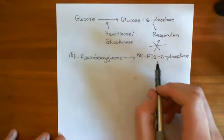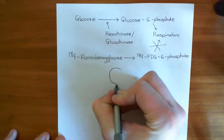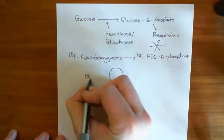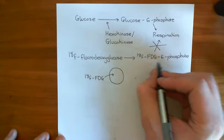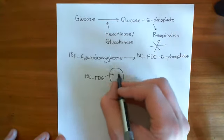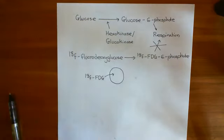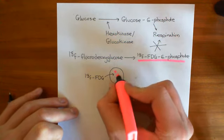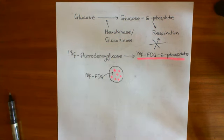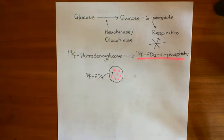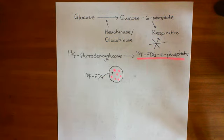So this molecule gets trapped within the cancerous cell. The cell takes up 18F-fluorodeoxyglucose-6-phosphate and it just gets trapped — the cell can't get rid of it, so it builds up lots of this molecule within its cytoplasm. This molecule has fluorine-18 attached to it, which decays and releases positrons. That leads to annihilation of positrons with electrons, releasing gamma photons we can detect — telling us which portions of the body are most metabolically active and contain a lot of 18F-FDG-6-phosphate. We'll continue the story in the next video.